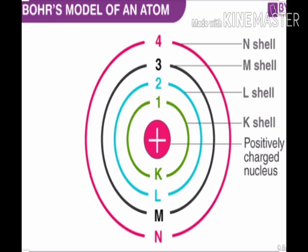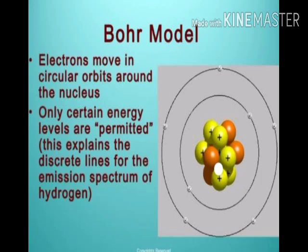Bohr's model of the atom somewhat rectified the defects of Rutherford's model. He showed that electrons move in fixed orbits such as K, L, M, N shells, with positive charges in the nucleus. Both models explain that electrons move in circular orbits around the nucleus, but Bohr added that only certain energy levels are permitted, which explains the discrete lines of the emission spectrum of hydrogen.